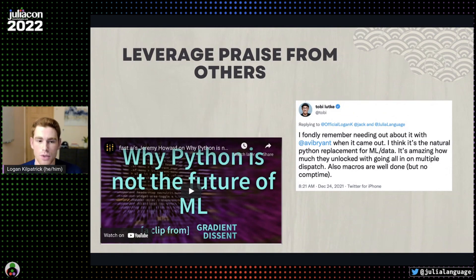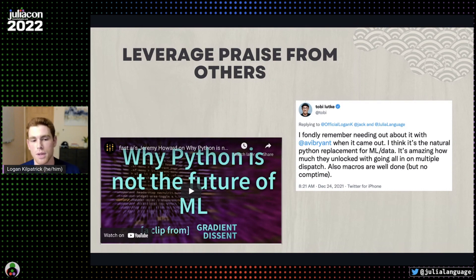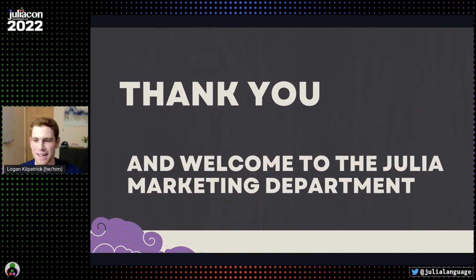The last piece I really enjoy is trying to leverage praise from other people who are prominent in their ecosystems — to piggyback off their brands and their kind words for the Julia ecosystem. Here are two examples: one is Jeremy Howard, the creator of Fast.ai, who's actually a keynote speaker this year at JuliaCon. The other is Toby Lütke, CEO and founder of Shopify. Using these to highlight to other folks that yes, Julia is real, and yes, people who know what they're talking about think the ecosystem is going to be successful, can be a really effective approach. Hopefully this was helpful — welcome to the Julia marketing department, and I'll see you at JuliaCon!